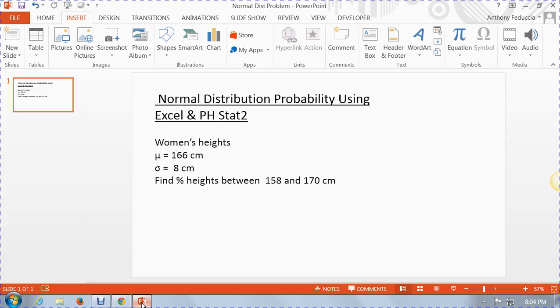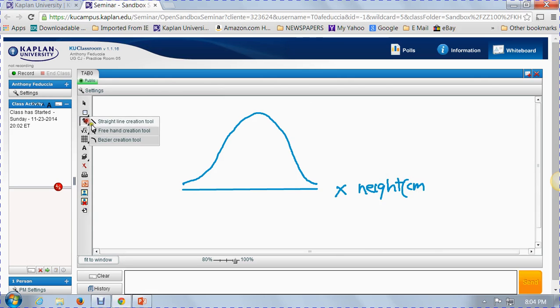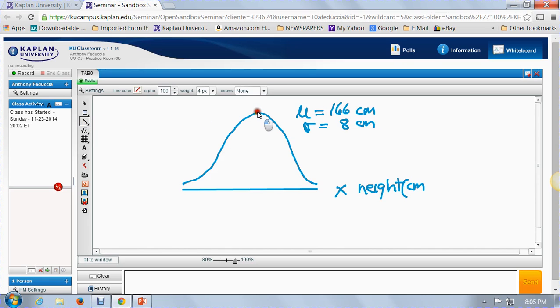So what we would do is we would draw the normal distribution first. And to draw the normal distribution, we would draw this bell-shaped curve like this. Our horizontal axis, we'll just call it X, that's women's height in centimeters. The curve goes from low values down at the left here to high values way up here.